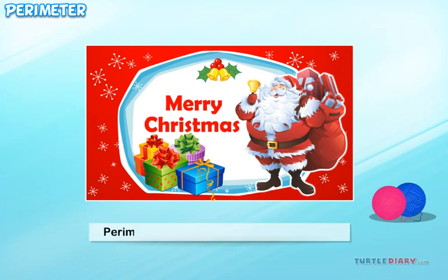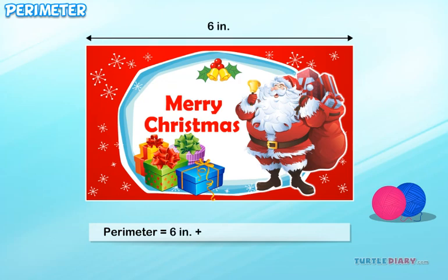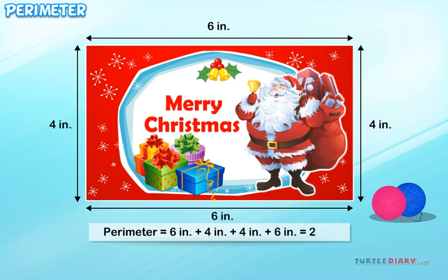The perimeter of the card is 6 inches plus 4 inches plus 4 inches plus 6 inches equals 20 inches. So, 20 inches of yarn is required for the card.